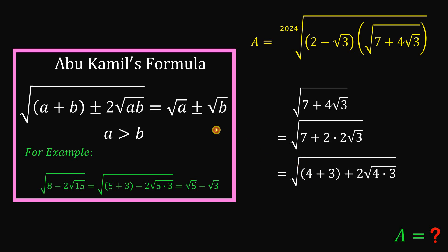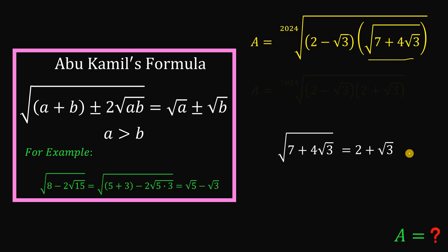Now at this point, we can now use what we call the Abu Kamil's way. Okay, so this simplifies to square root of 4 plus square root of 3 because 4 is greater than 3. And this square root of 4, we can simplify this further as 2. So square root of 7 plus 4 times root 3 is equivalent to just 2 plus square root of 3. So we can replace this with 2 plus square root of 3.